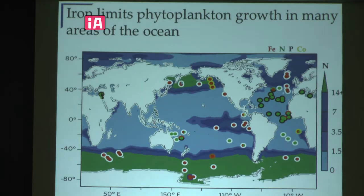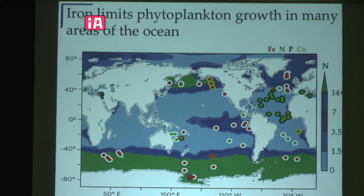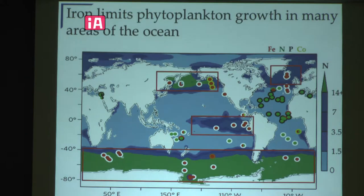Because of this, it's been recognized that iron is often limiting for growth in many areas of the ocean. This map shows surface nitrate concentrations and where individual incubation experiments have been done; the color of each dot represents which nutrient was limiting. There are a lot of red dots — those are experiments where iron was found to be limiting, mostly in high-nitrate low-chlorophyll (HNLC) regions.